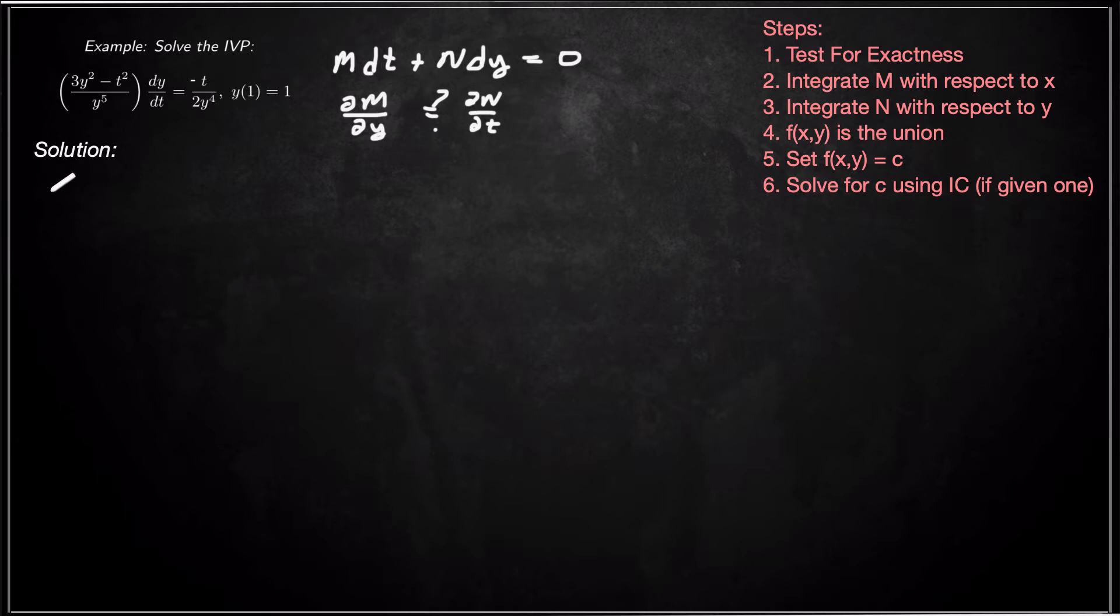So what we need to do is first rewrite the differential equation in differential form with everything on the left. So we need to basically just multiply by dt on both sides and then move that term over. So that'll give us t/(2y⁴) dt plus (3y² - t²)/y⁵ dy equals 0.